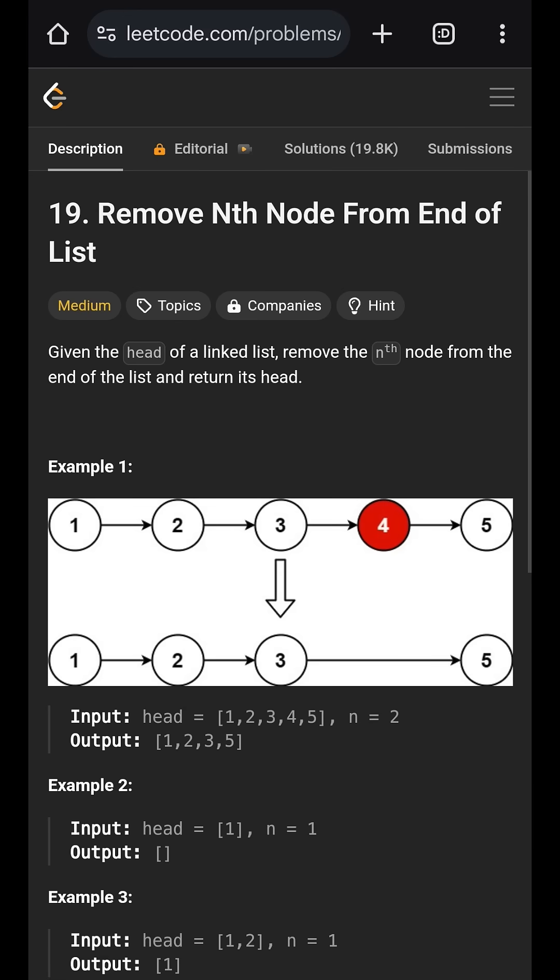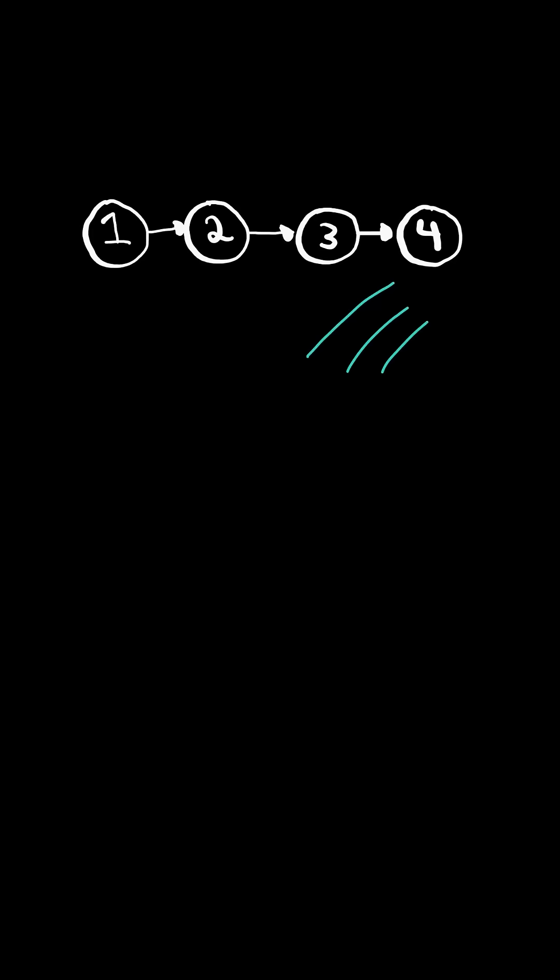Remove nth node from end of list. Given a linked list and an integer n, remove the nth node from the end of the list and return the head. We will solve this in O of n time.